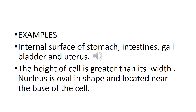The height of the columnar cell is much greater than its width, and the nucleus is commonly oval in shape located near the base of the cell. The nuclei of the cells in a sheet of simple columnar epithelium are often situated roughly at the same level. In many locations, the cells of simple columnar epithelium show surface modifications including microvilli, kinocilia, and stereocilia — which will be studied in detail in the next lecture.